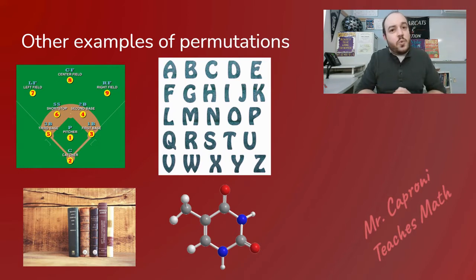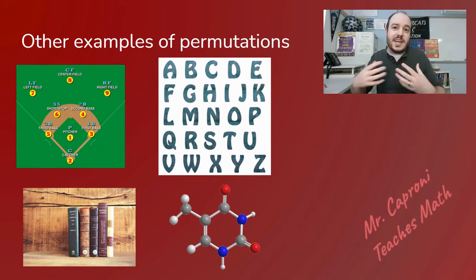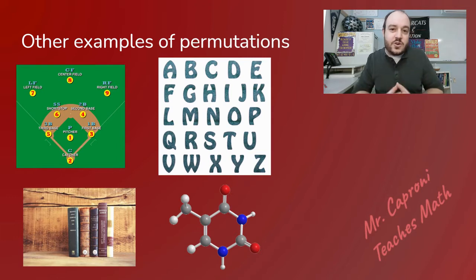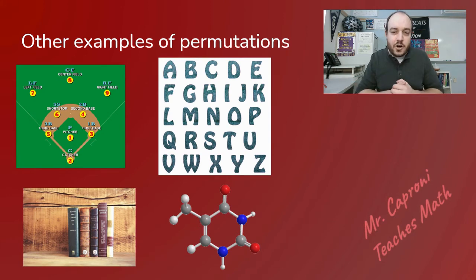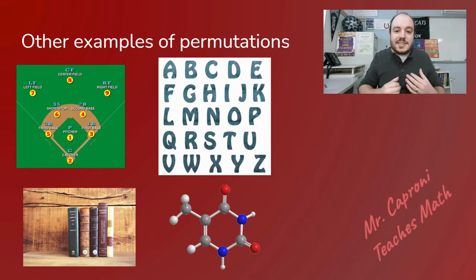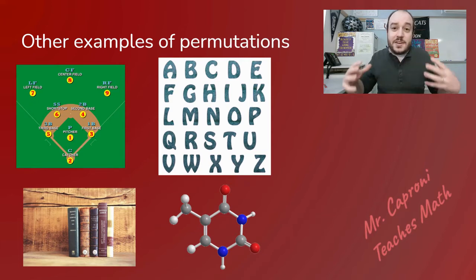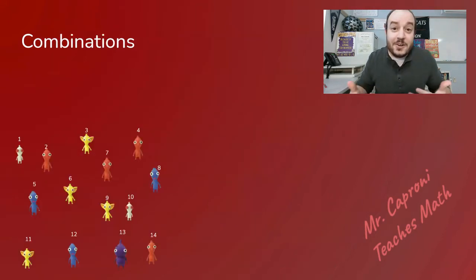If I'm grabbing a group of letters and want to know how many different ways I can arrange them, that's a permutation because it's not just what letters I get — it's the exact order I put them in. Another common scenario is arrangements like a bookshelf: how many different ways could I arrange these books? That's a permutation question because it matters what order I place them on the shelf. Also, when combining atoms in a molecule, the order and position of those atoms matter when forming the molecule, so that's a permutation question too.